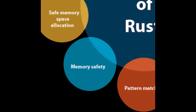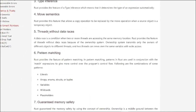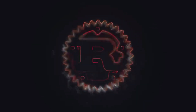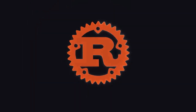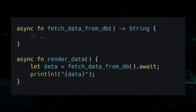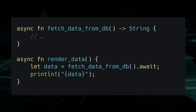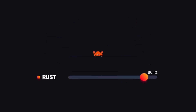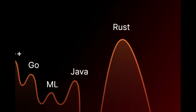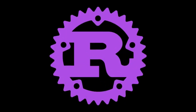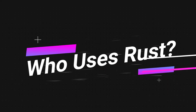Firstly, Rust's focus on memory safety and zero-cost abstractions equips you with the skills to write safer and efficient system-level code. As a systems programming language, it's ideal for building everything from operating systems to game engines. Moreover, the demand for Rust developers is rapidly increasing, making it a valuable skill in today's tech landscape.